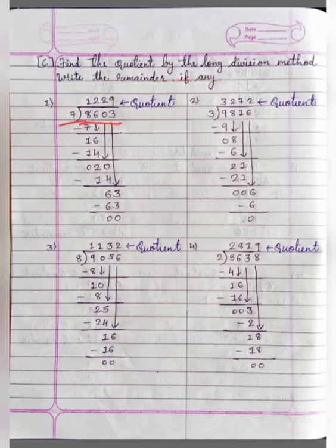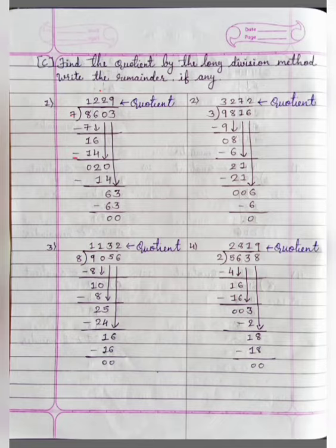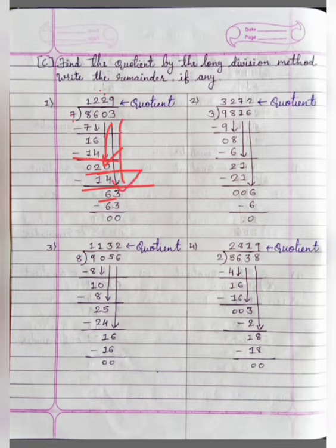8603 divide by 7. 7 ones are 7. 8 minus 7 is equal to 1. And 6 here, so now we have 16. 7 twos are 14. 16 minus 14 is equal to 2. We will bring down 0, so now we have 20. Again 7 twos are 14. 20 minus 14 is equal to 6, and we will bring down this 3 here.